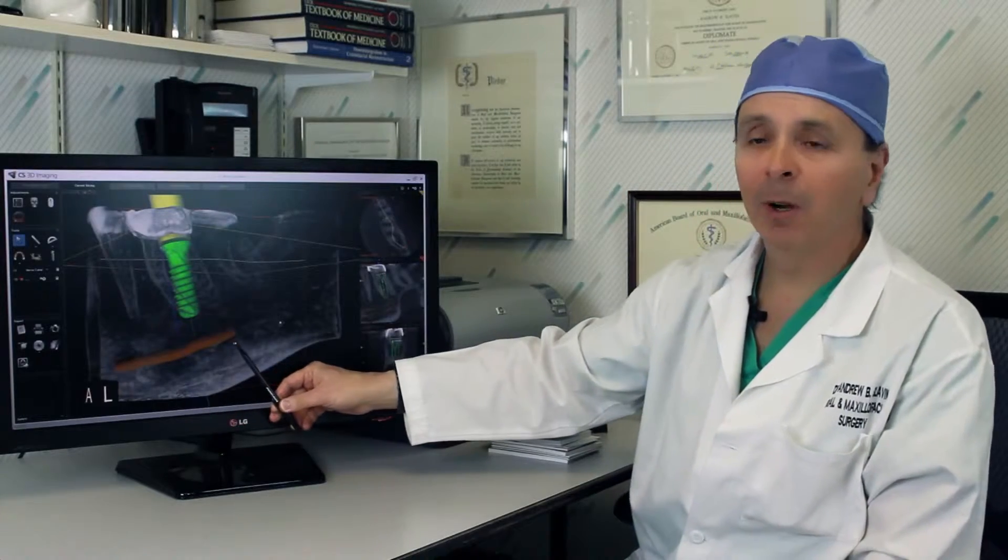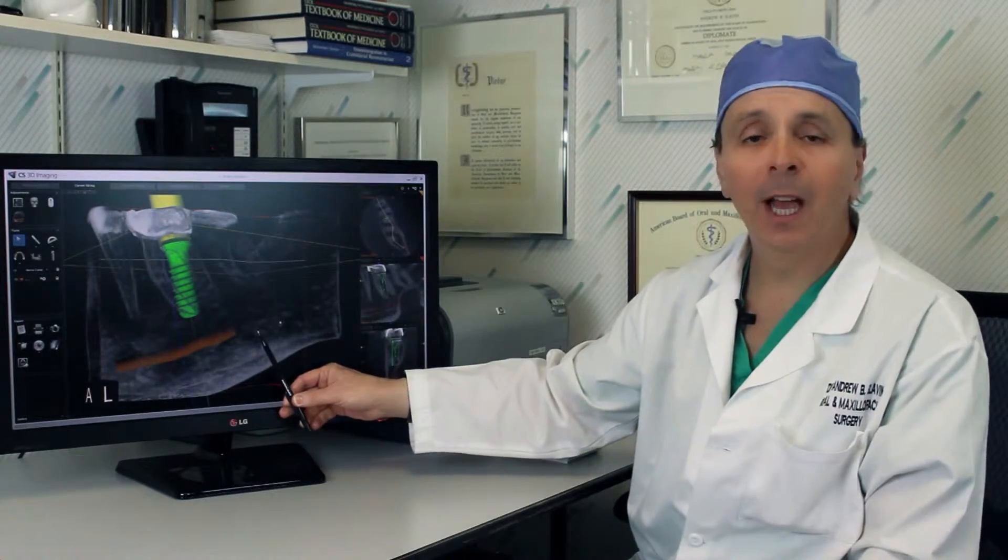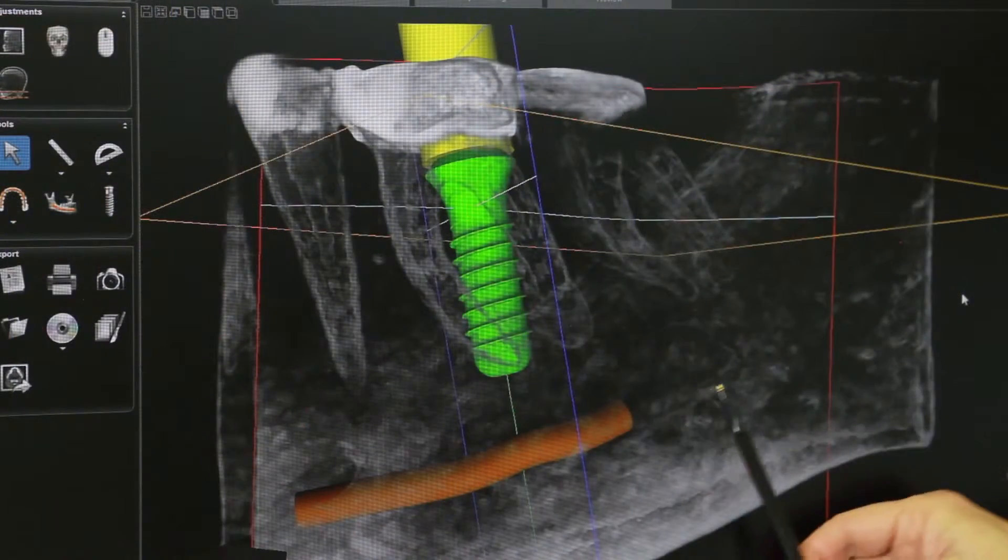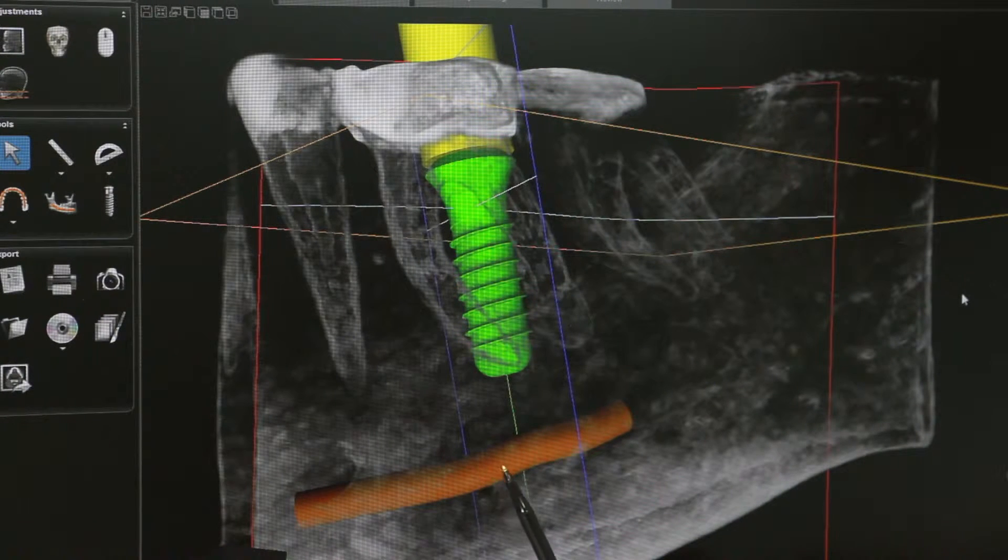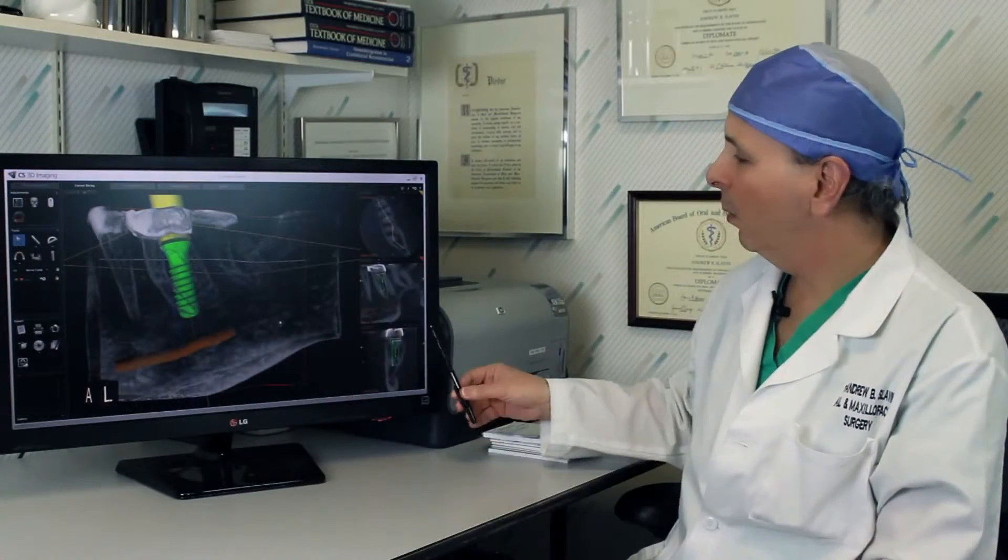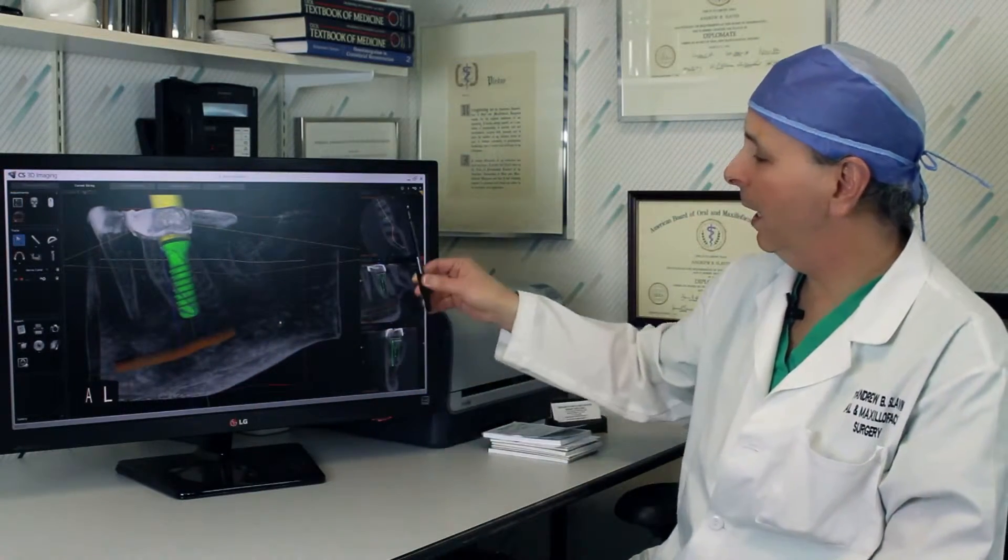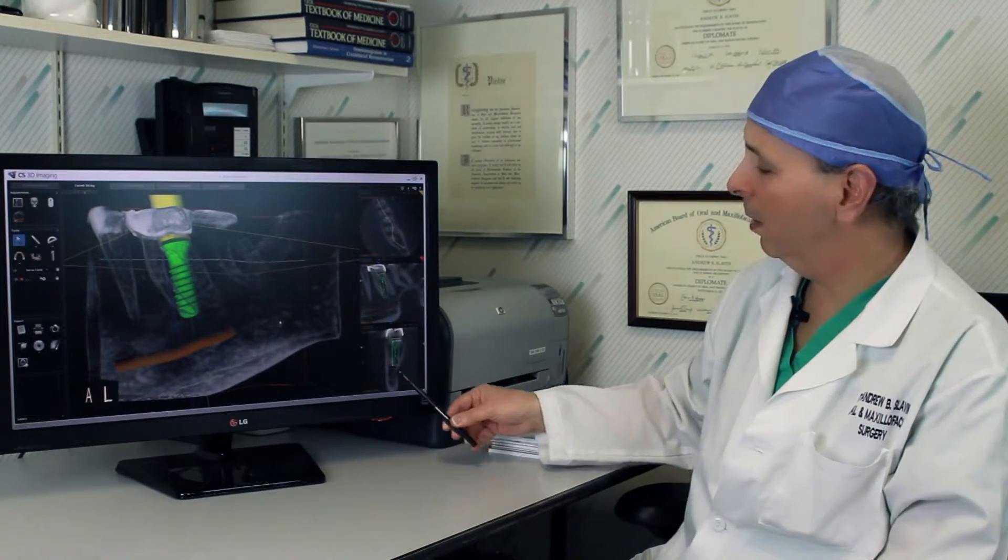The nerve which runs through the jaw bone, that's actually numbed when you have a shot of Novocaine that makes your lip numb, is a critical structure. The implant has to be shorter than this to avoid damage to that nerve. We can see this implant in three dimensions as well as the tooth and the nerve.